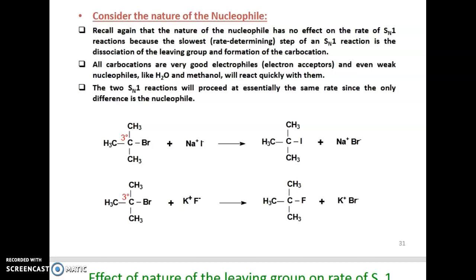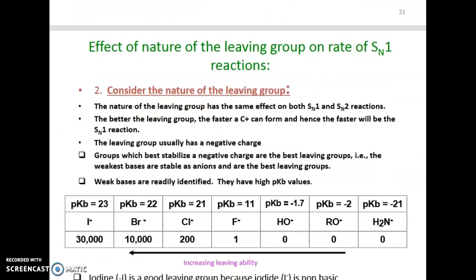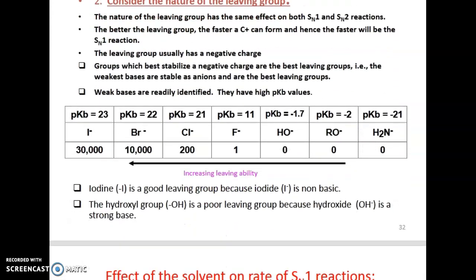The two SN1 reactions will proceed at essentially the same rate since the only difference is in the nucleophiles. The nature of the leaving group has the same effect on both SN1 and SN2 reactions — the better the leaving group, the faster a carbocation can form and hence the faster the SN1 reaction. The weakest bases, stable as anions, are the best leaving groups.